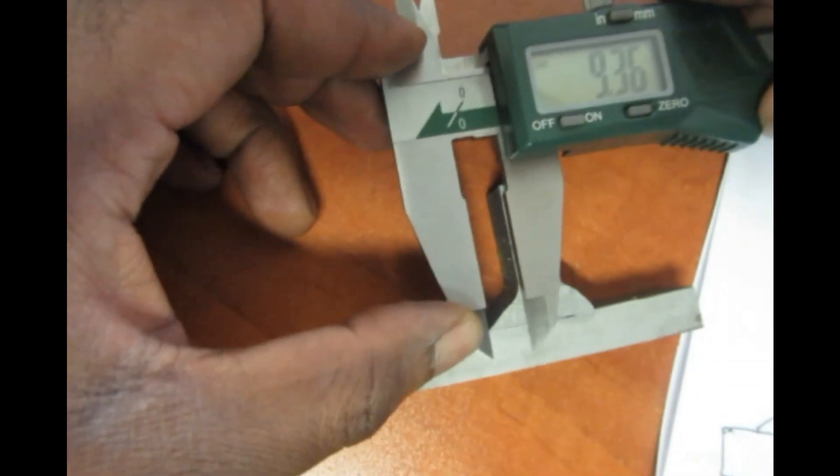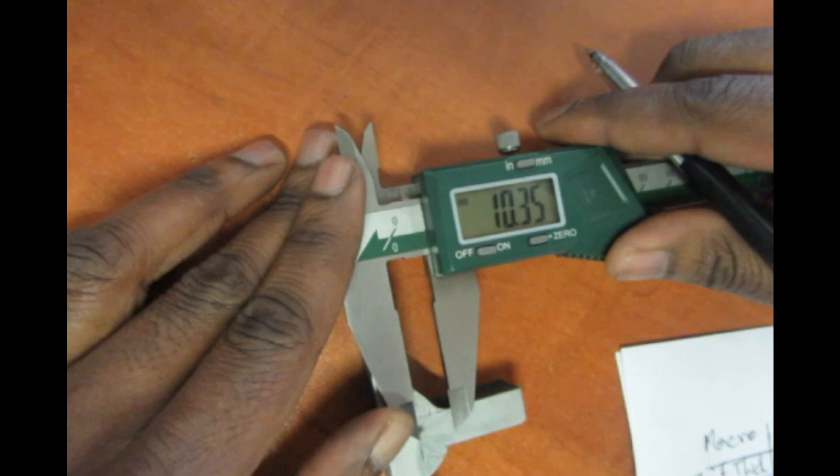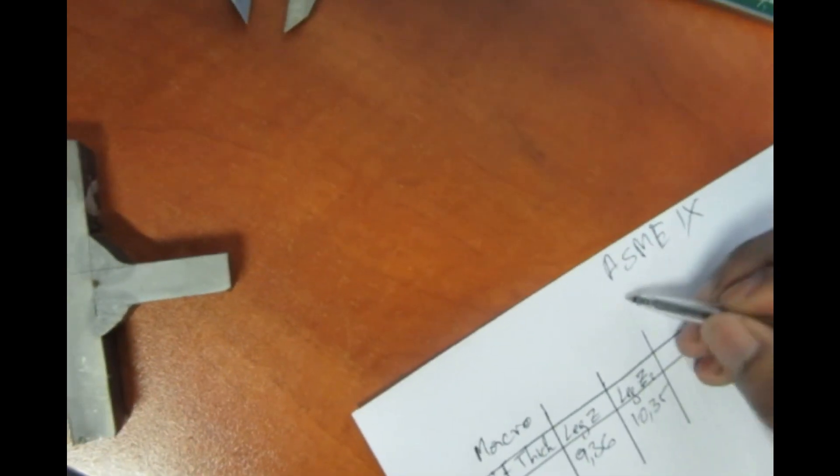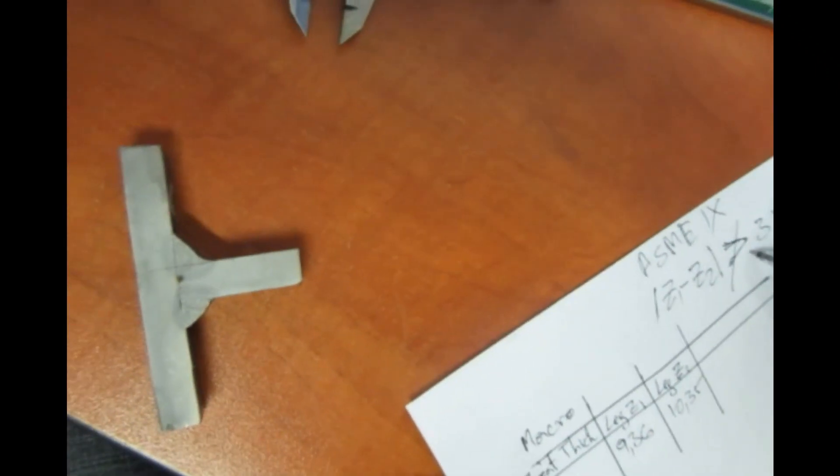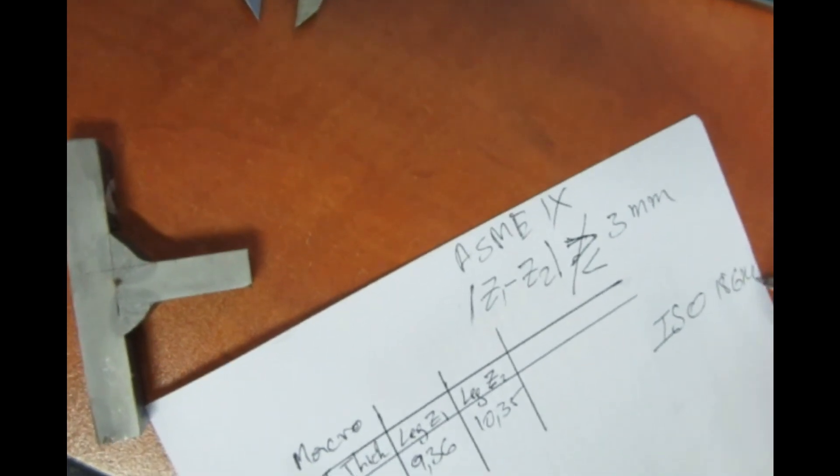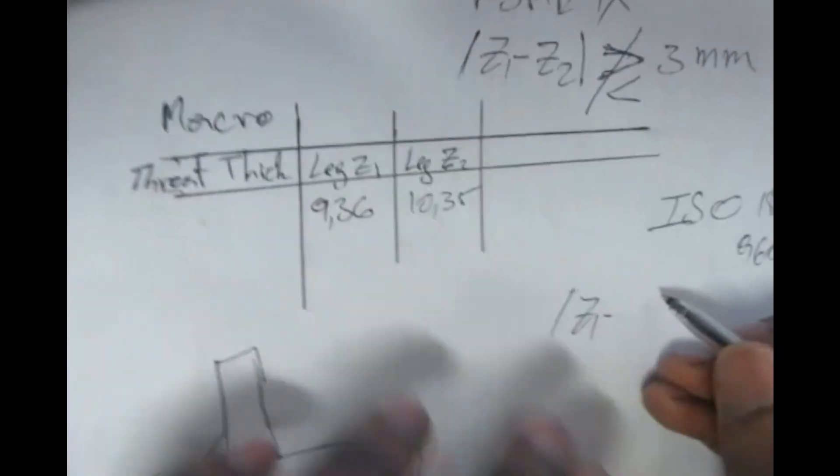Now I measure the other leg length. That measures 10.35 millimeters. The difference between Z1 and Z2 must not be above three millimeters. For ISO 15614-1 as well as 9606-1, the difference between the leg lengths must not be above 1.5 plus 0.15 times the throat thickness.